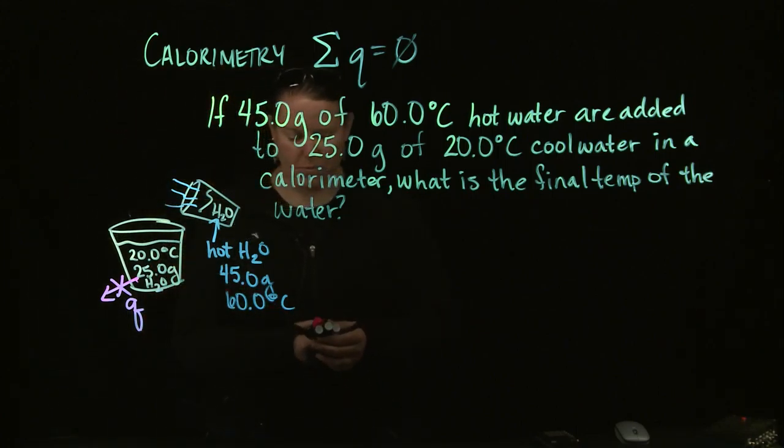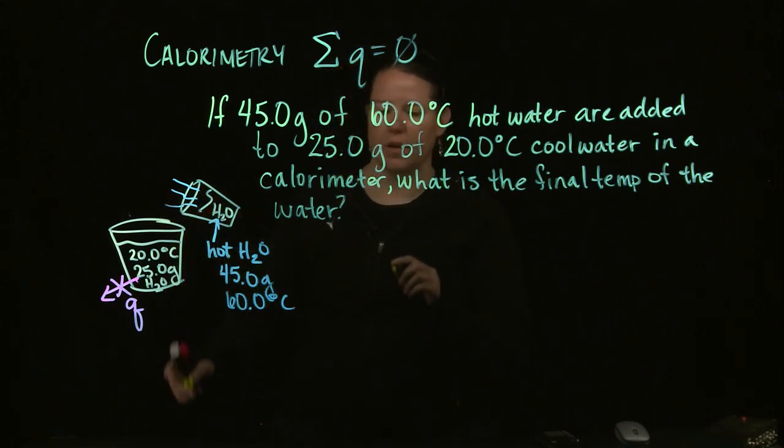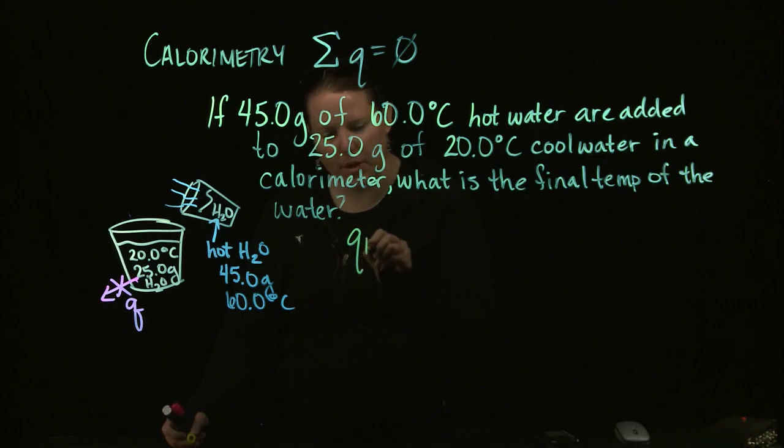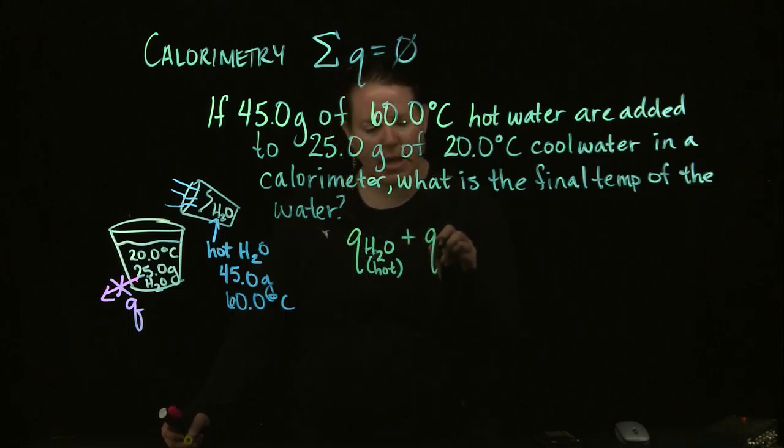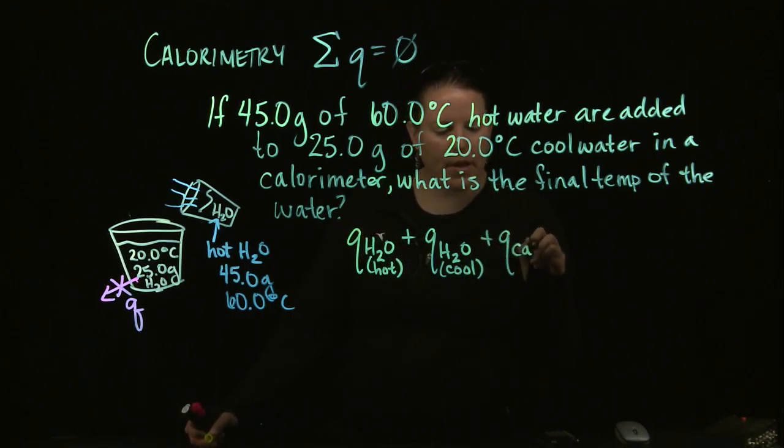Last piece. Since we drew the picture, we need to write out all of the heat that might be associated with things in this picture. So we have a heat of the water that's hot, we have a heat of the water that's cool, and we have a heat of the calorimeter.